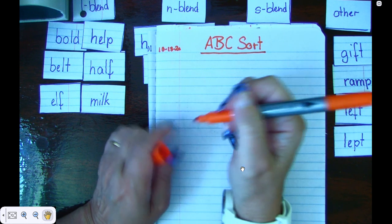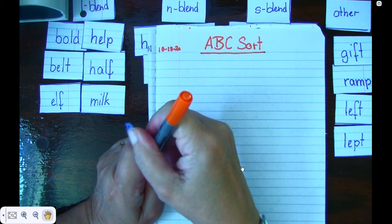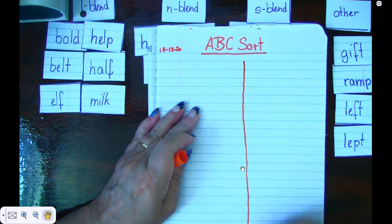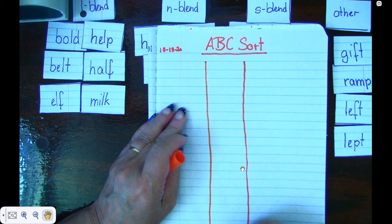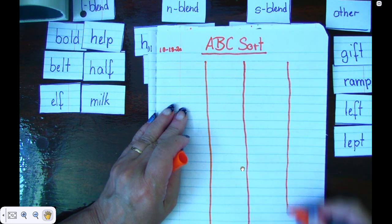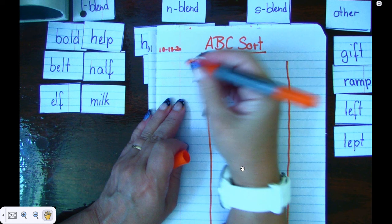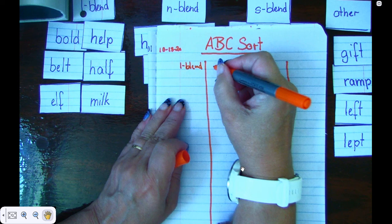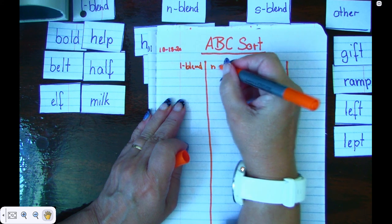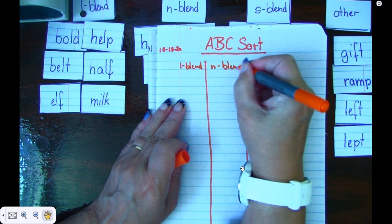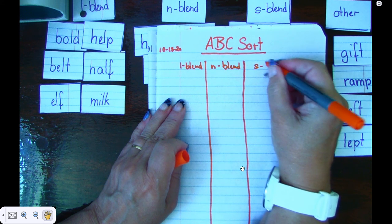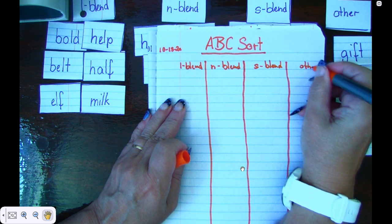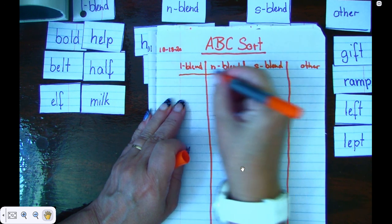To help me with the ABC sort, you all know that I write my headers first, right? So I have four columns and in those four columns I need to write my L blend, my N blend, my S blend, and all the other blends, and I draw a line under my headers.